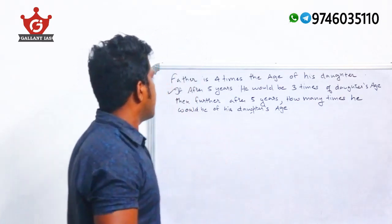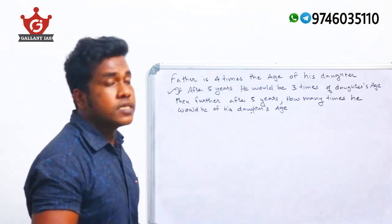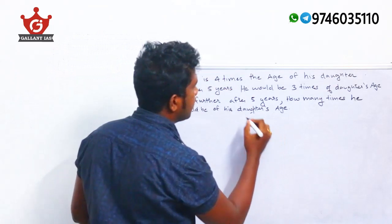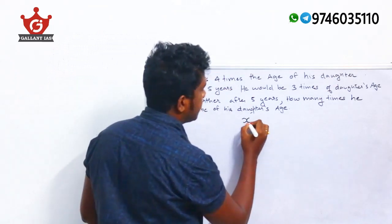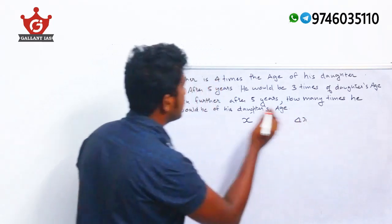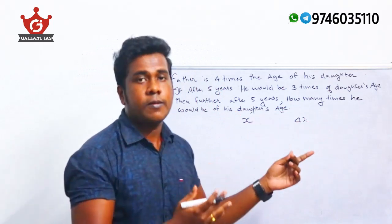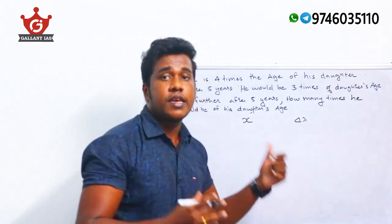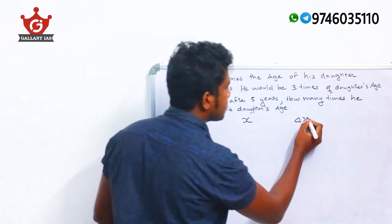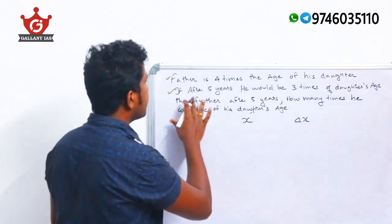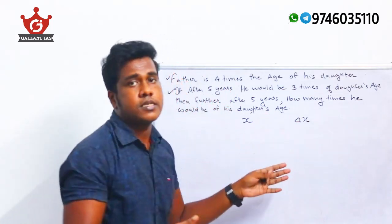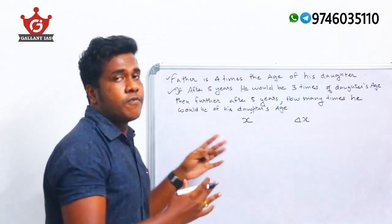Father is four times the age of his daughter. From the first statement, if I am assuming the age of the daughter as X, then father's age will be 4X. That is, father's age is four times the age of his daughter.